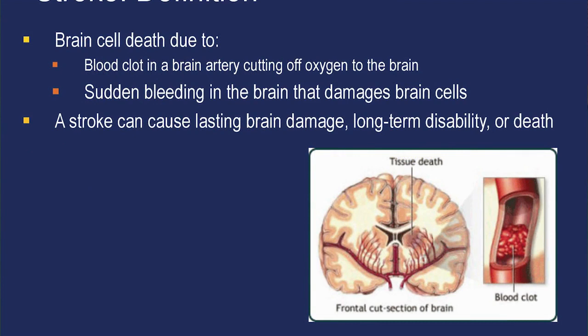To understand stroke, it helps to understand something about the brain. The brain controls our movements, stores our memories, and is the source of our thoughts, emotions, and language. It also controls many body functions like breathing and digestion. To work properly, the brain needs oxygen. When someone has a stroke, brain cell death occurs due to a blood clot in an artery cutting off oxygen to the brain, or because of sudden bleeding in the brain.